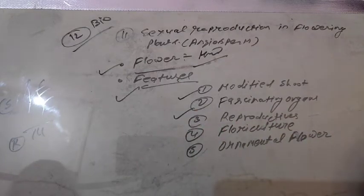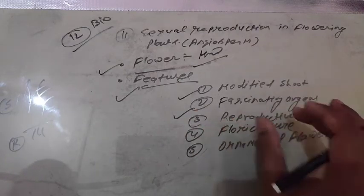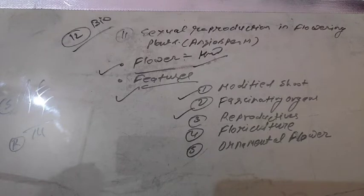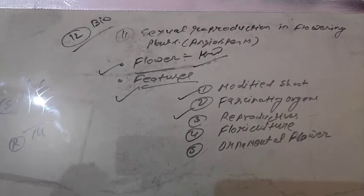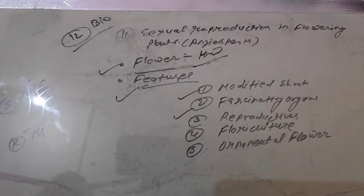The second feature of flowers is that flowers are actually fascinating organs. Fascinating means attractive. Why attractive? Because it helps to attract insects at the time of pollination. So flowers are called fascinating organs.